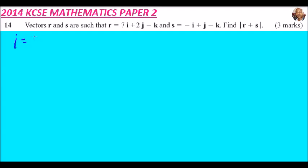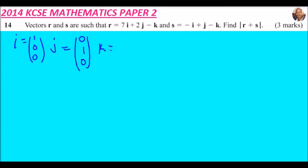You are taught in Form 3 that the vector i represents three dimensions: it is (1, 0, 0). Then we have vector j equals (0, 1, 0), and vector k equals (0, 0, 1). Those are the column vectors of i, j, and k.